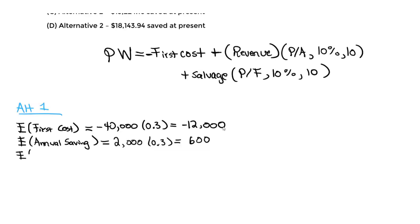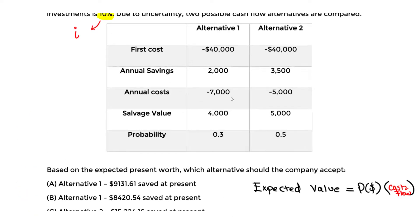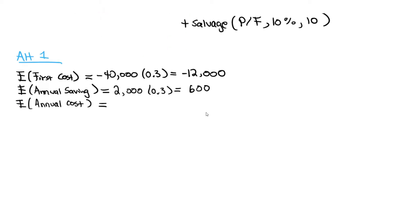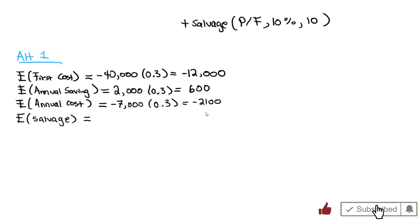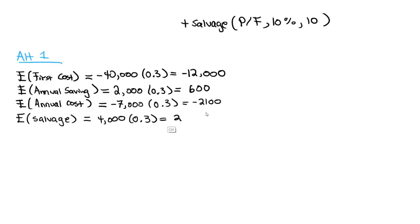The expected value of the annual cost is -7,000 × 0.3 = -$2,100. The expected value of the salvage is 4,000 × 0.3 = $1,200, which is positive since we receive it.